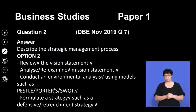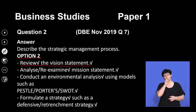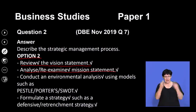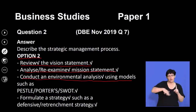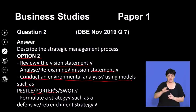In option two, we have to review the vision statement, analyze or re-examine the mission statement, and then conduct environmental analysis using models such as PESTLE, Porter's Five Forces, or SWOT. We must also formulate our strategy — for example, is it going to be a defensive retrenchment strategy? What are we looking to achieve? Are we looking to grow our business, or are we going into a defensive mode where we have to cut down on things to ensure the survival of our business?